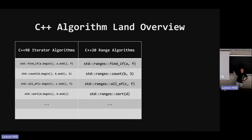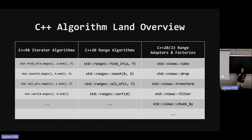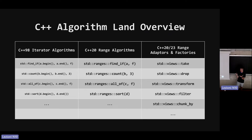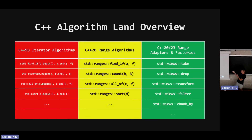Everything we're going to focus on in this talk is in the third vertical, which I refer to as range adapters and range factories — those are the terms used in the standard. A factory is something that generates a sequence, like iota. An adapter takes a sequence and does something to it, like transform. So technically these aren't called algorithms in the standard, but in my mental model I refer to all three verticals as algorithms. Know that there's iterator algorithms, range overload algorithms, and then ranges land — which is what we're going to focus on today.